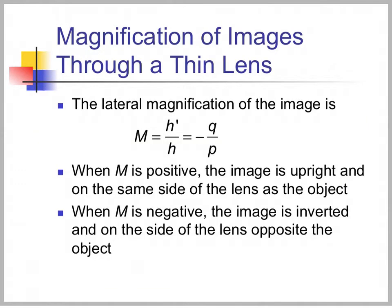The lateral magnification of an image through a thin lens is the same as for mirrors: M equals h-prime over h, or minus Q over P. When M is positive, the image is upright and on the same side of the lens as the object. When M is negative, it's inverted and on the opposite side of the lens from the object.